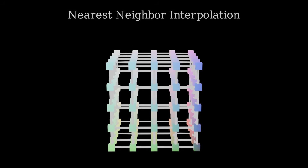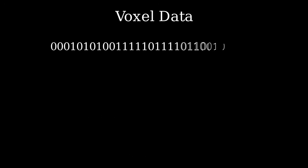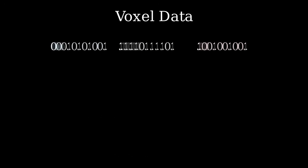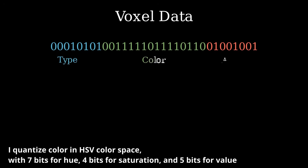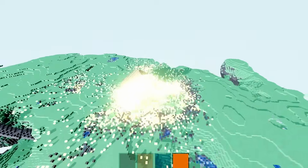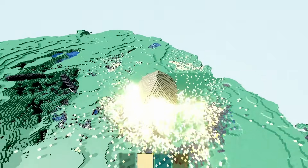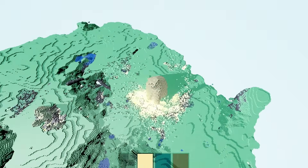I use a storage buffer with 32 bits per voxel. Each voxel stores its type in 8 bits, its color in 16 bits, and it has 8 bits for auxiliary data. Each voxel is scaled down such that its edges are 1/8th units in length.